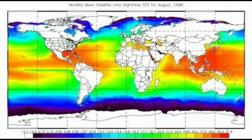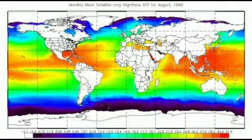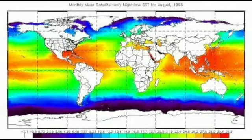The Labrador Current is a cold water current which flows southwards from the Arctic Ocean along the coast of Canada. The current merges with the Gulf Stream near Newfoundland. As the current originates from the Arctic Ocean, it brings down huge icebergs from the Arctic Ocean to the eastern coast of Canada.